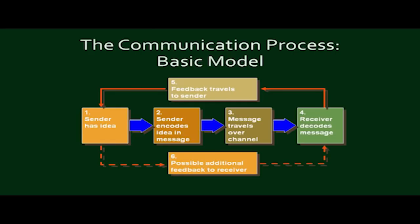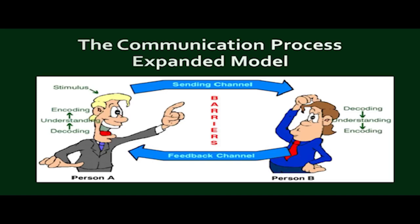Look at the communication process basic model: the sender has an idea, the sender encodes the idea in a message, the message travels over a channel, the receiver decodes the message, and after decoding the receiver sends feedback which travels back to the sender. Once the sender receives it properly, the communication loop is complete, and the sender may send possible additional feedback to the receiver. You can also understand the communication process in the expanded model where two or three items are added: the stimulus part — external motivation or internal thinking — and encoding and decoding involves understanding. In between there are also barriers in the expanded model. In the coming lectures we will look at the barriers.